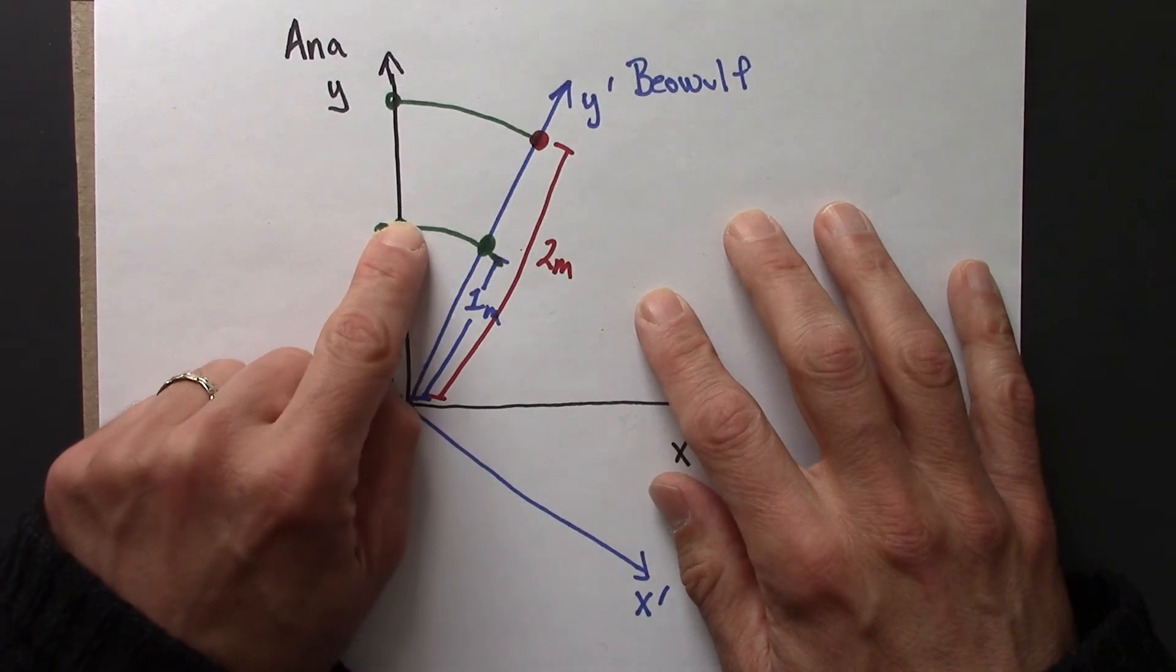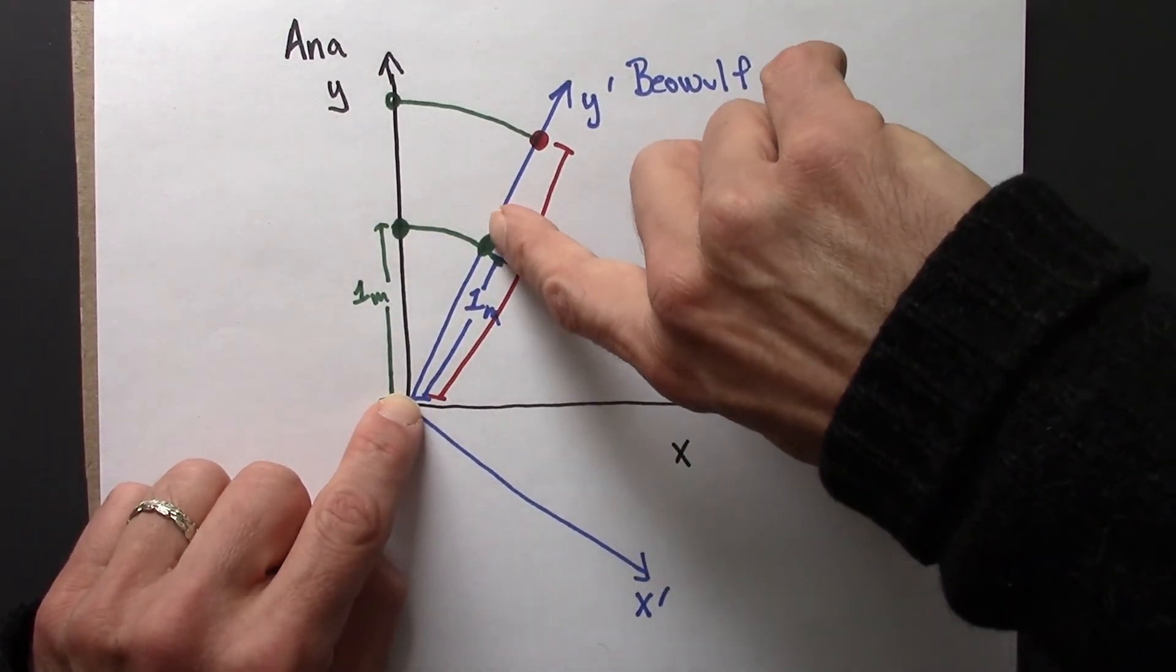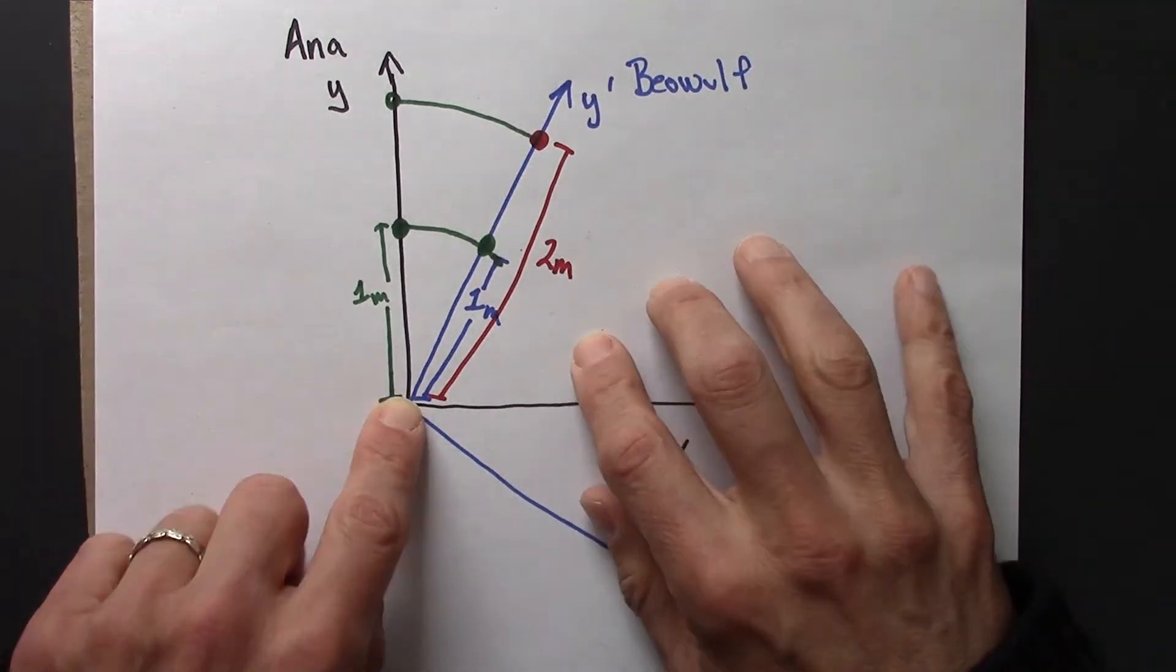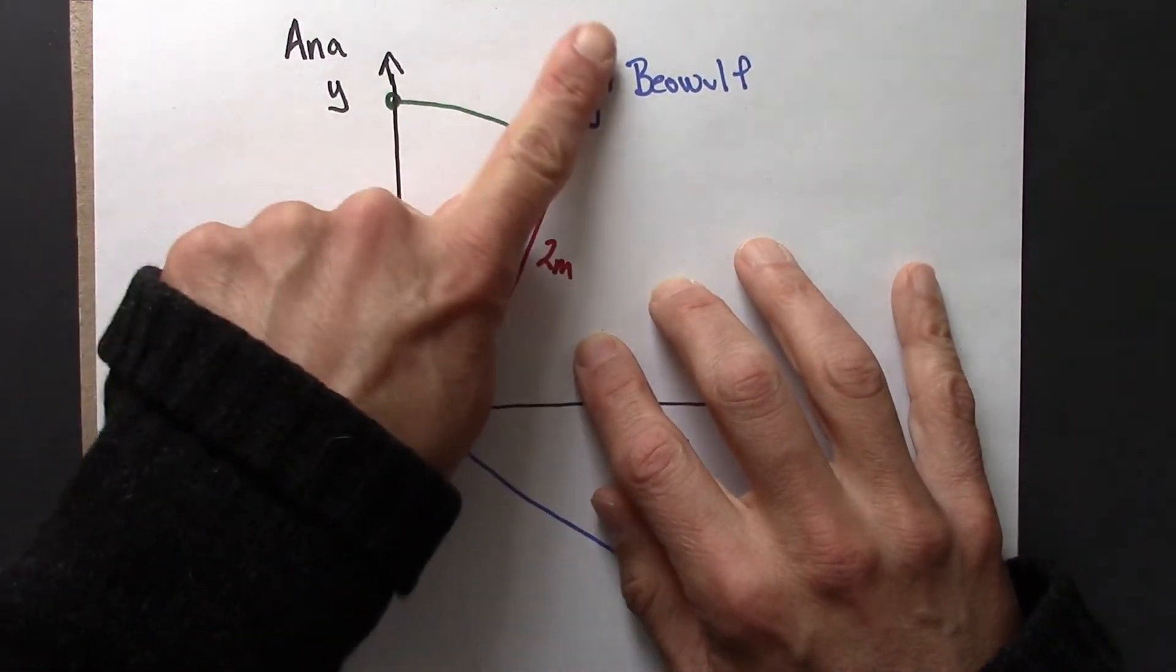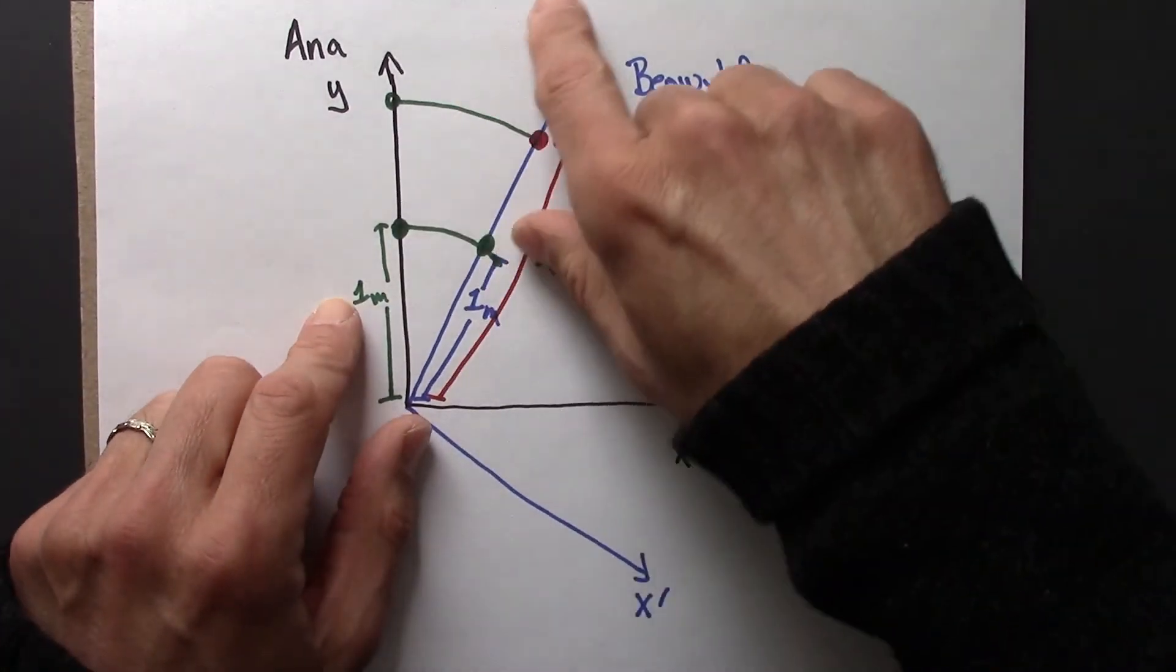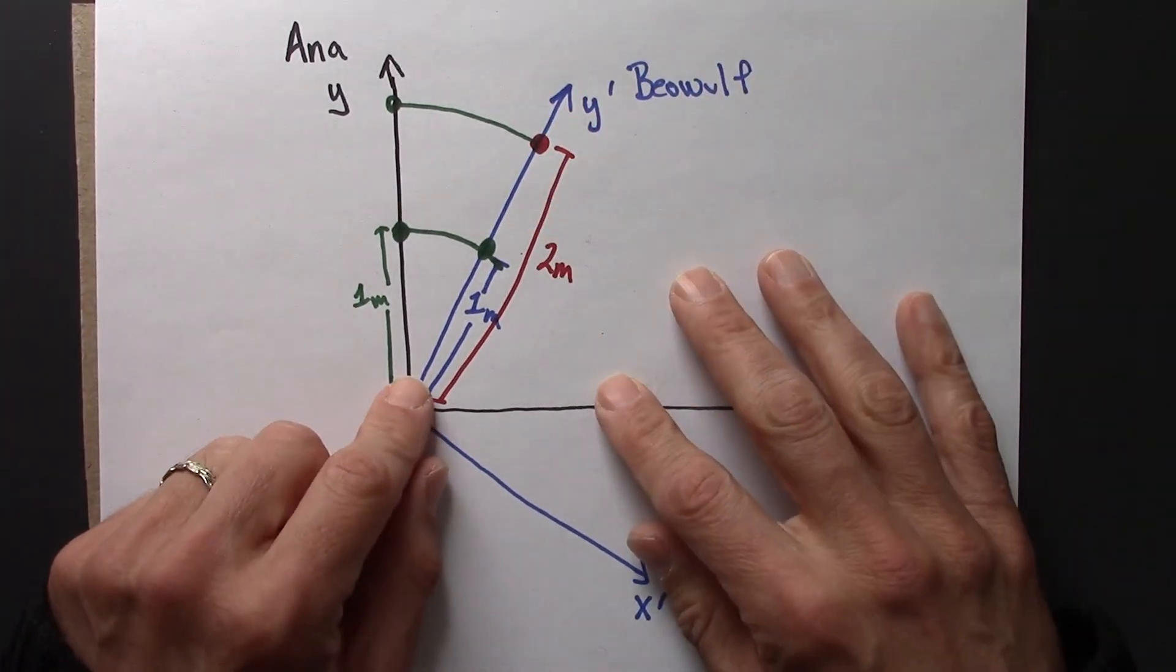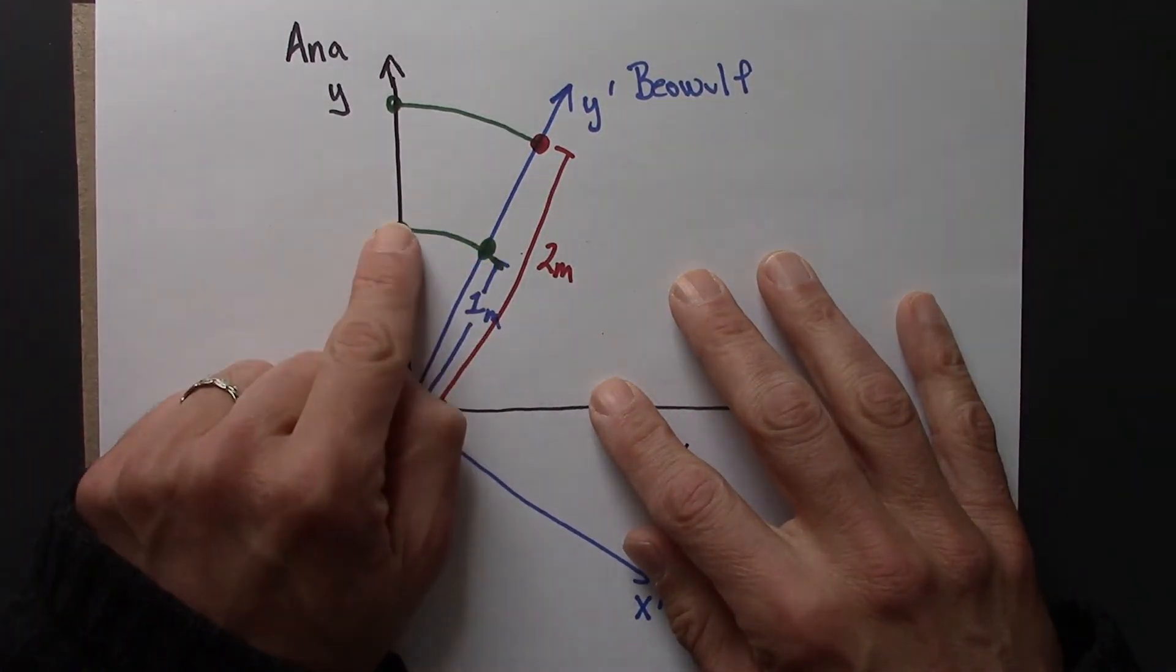So you've got one meter here, arc along a circle of radius one, and where that intersects, that's where we would mark the one meter point for Beowulf. Same thing for two meters and three meters. So in space, this process seems a little bit maybe unnecessary or overkill. But what we'll see in the next video is that a similar line of reasoning will lead to calibrating a time axis, and the result there will be I think a little surprising and counterintuitive.